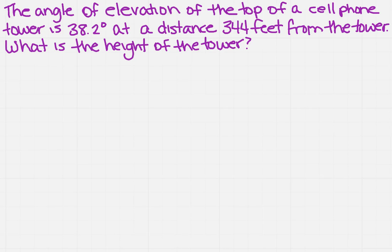The angle of elevation of the top of a cell phone tower is 38.2 degrees at a distance 344 feet from the tower. What is the height of the tower? The easiest way for most people to do this is to draw a picture, and I have to agree on this one, so I'm going to draw my right triangle.